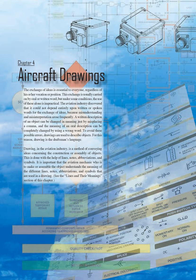Drawing is the draftsman's language. In the aviation industry, drawing is a method of conveying ideas concerning the construction or assembly of objects. This is done with the help of lines, notes, abbreviations, and symbols. It is important that the aviation mechanic who is to make or assemble the object understands the meaning of the different lines, notes, abbreviations, and symbols that are used in a drawing.